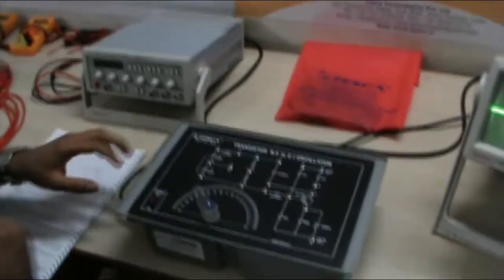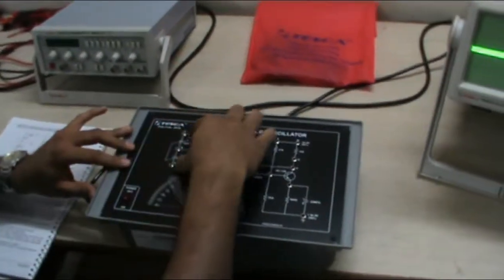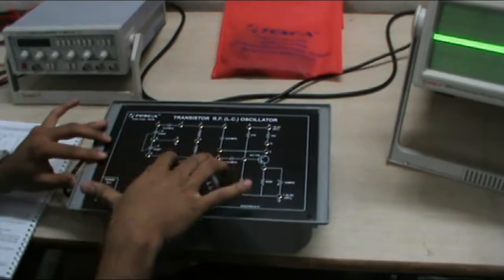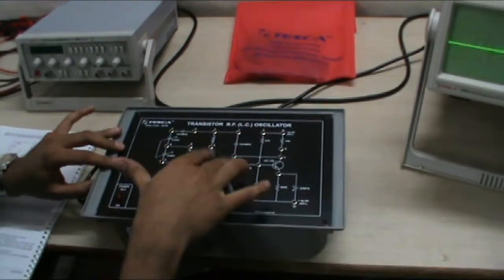Now, this is our equipment in which the complete circuit is shown. We will make the connections in order to make it Hartley, Colpits or Clapp.